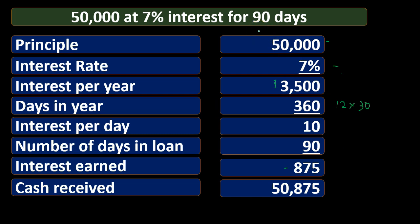Depending on the loan type, we might want to break it out by days or months. If the loan is less than a year, we might use days. If a problem gets very specific, we'll need to use the actual number of days in the month. If it's a longer-term problem, we might round to months and use months as the calculation, as we'll see next.